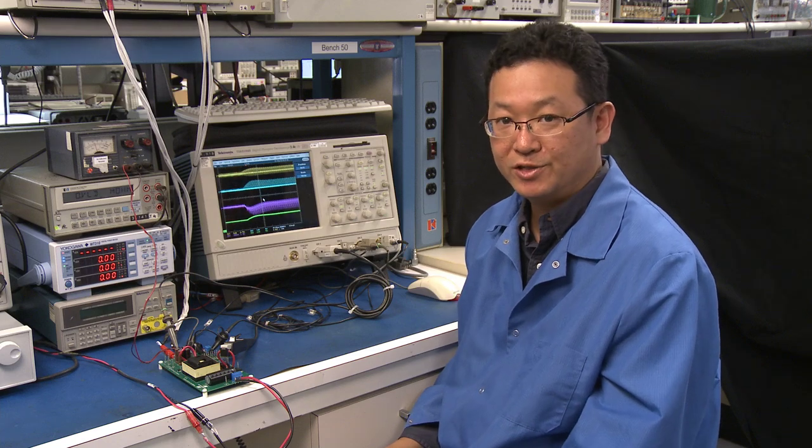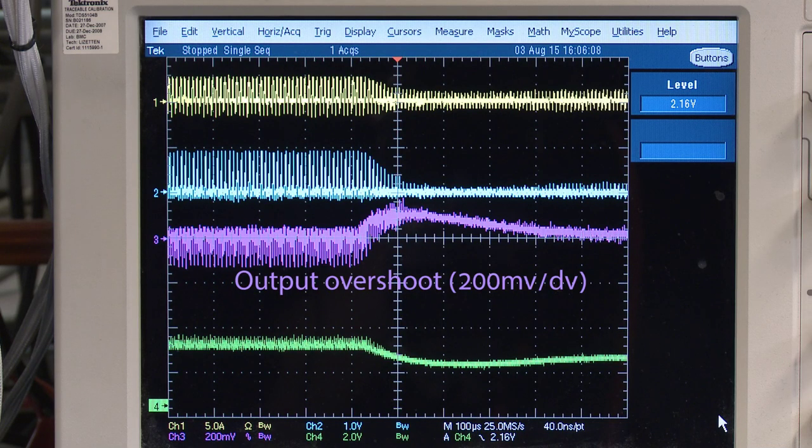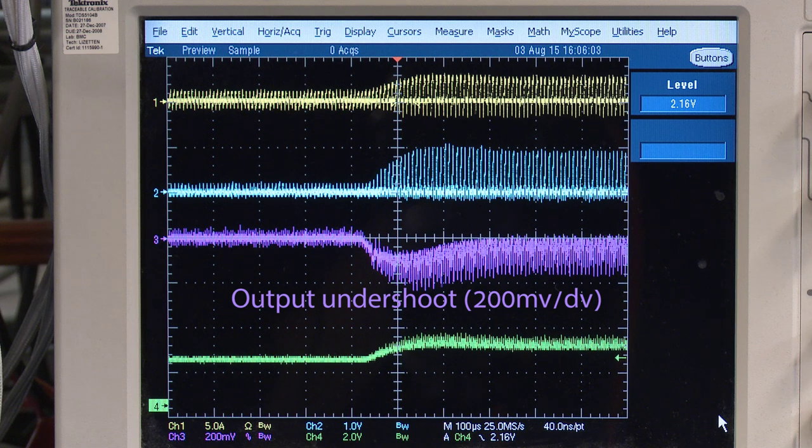Let's take a look at the load change and response. You can see that there is a very small overshoot and undershoot when the load changes between 100% and 10% load conditions.